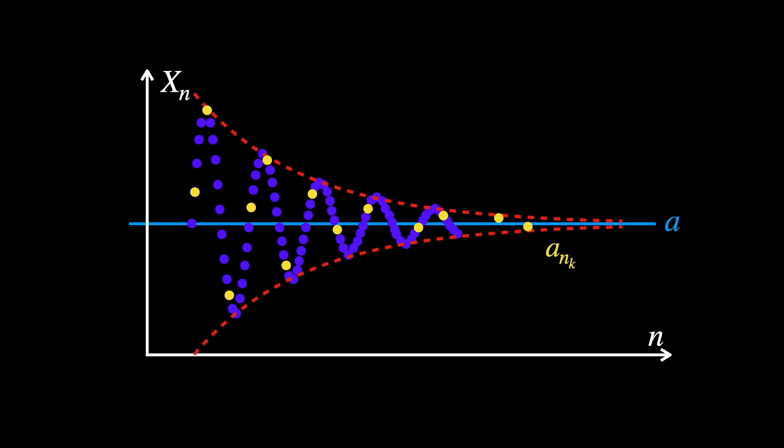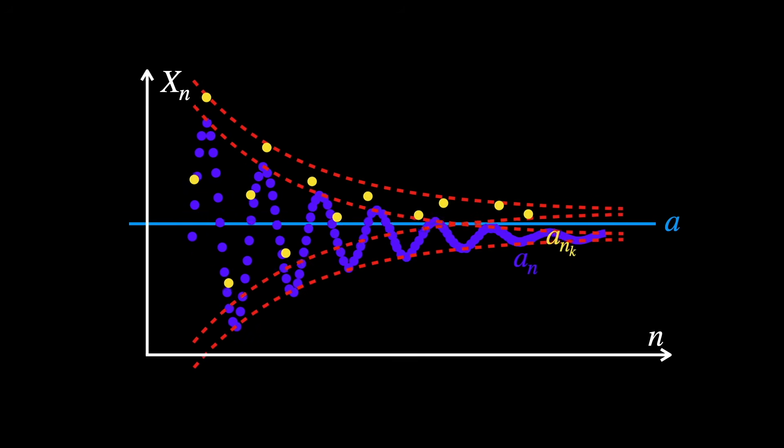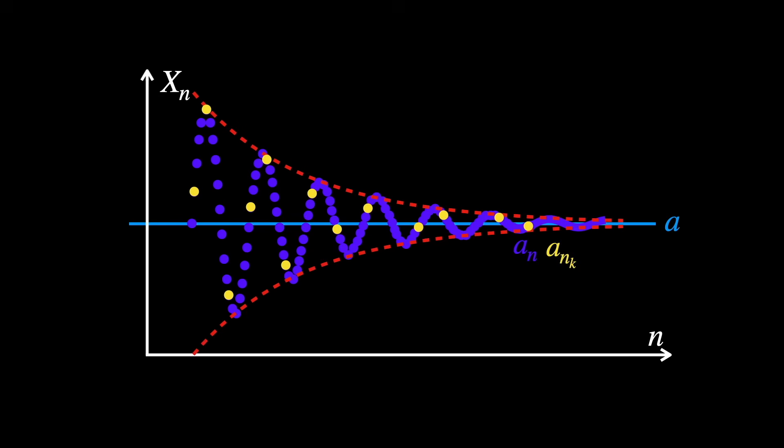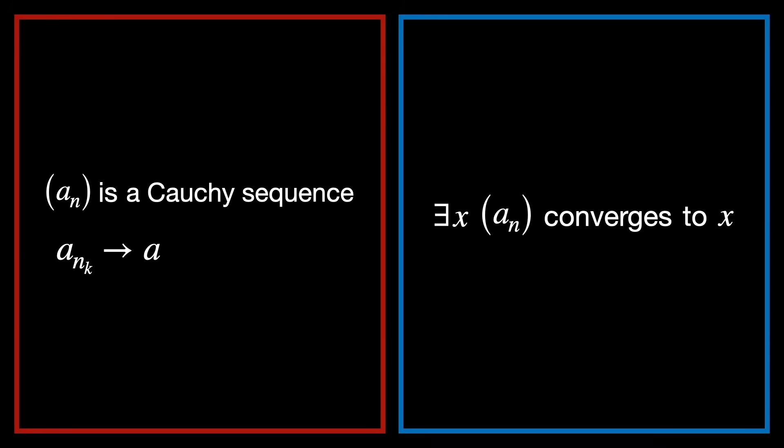Since a_n is a Cauchy sequence, its terms all bunch together, meaning they can't split and go to different limits. So the most reasonable candidate for the full sequence's limit is the same as the number a. And at this point, we've just changed the problem from asking does some limit exist, to let's show it converges to this particular number.